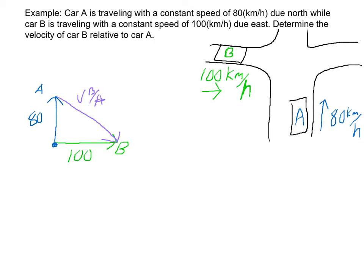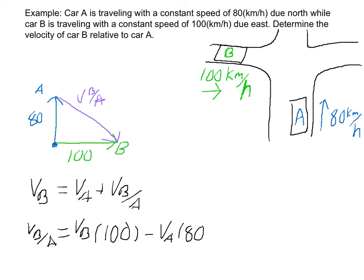And so that's how you can do it graphically. Another way you could do it is V sub B equals V sub A plus V sub B with respect to A. And if you rearrange them, it ends up being V sub B with respect to A equals V sub B, which is 100 in the x direction, minus V sub A, which is 80 in the y direction.